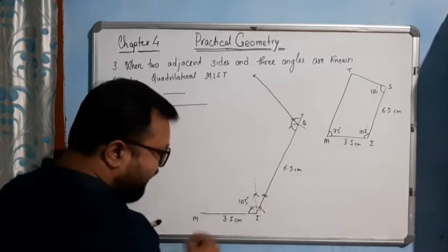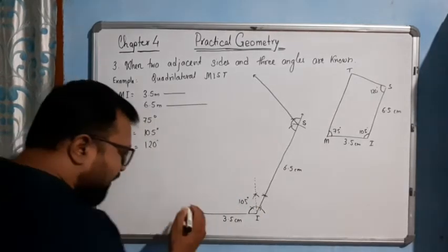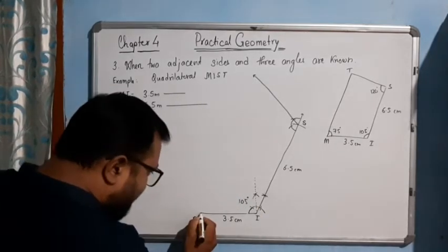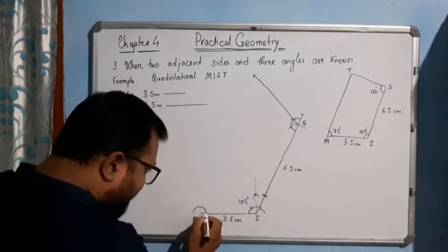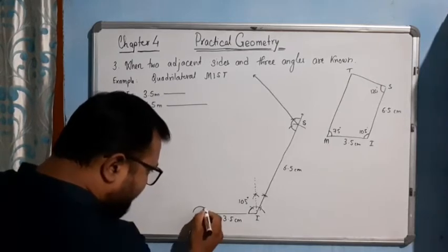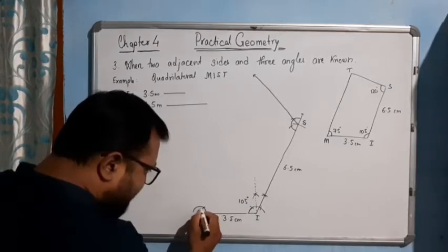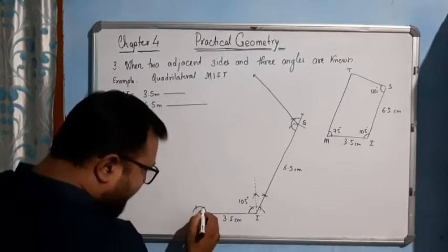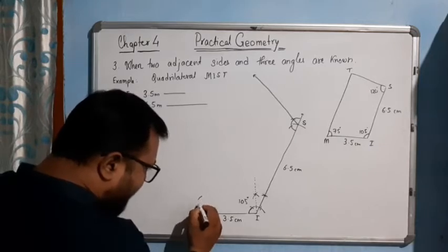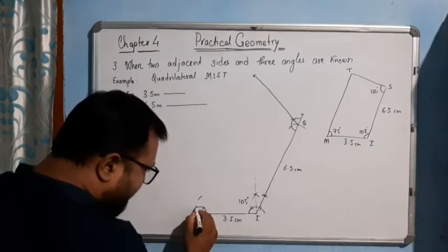So 60 plus 15 gives us 75 degrees. Place the pin here and draw an arc. Put another arc at 60 degrees, another arc at 60 degrees. Again place the pin here, put one arc here, and again place the pin and put one arc here.